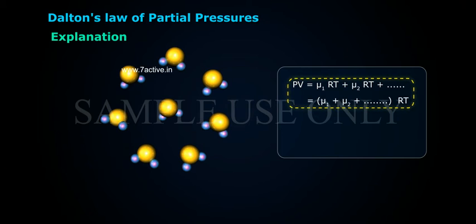Then, PV is equal to μ₁RT plus μ₂RT plus so on, which is equal to (μ₁ + μ₂ + ...) into RT.